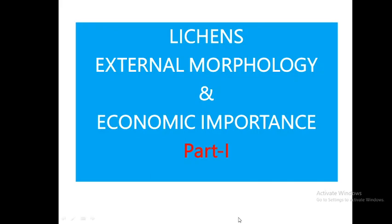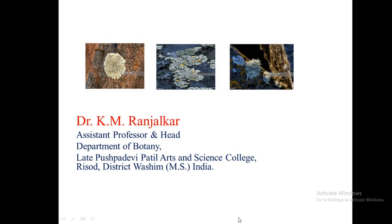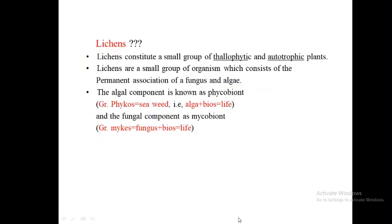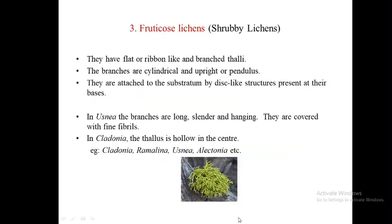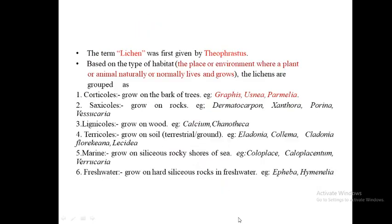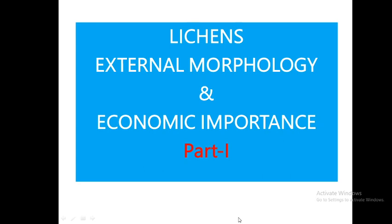Let us discuss about lichens' external morphology and economic importance. These are the general characters of external morphology in lichens. Lichens are a small group of curious plants consisting of about 400 genera and about 1500 species.